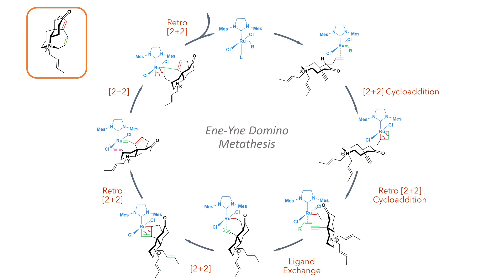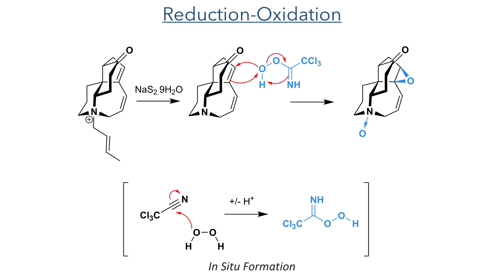Overall, this transformation has formed two new rings to complete the tetracyclic phosetamine framework. With the tetracyclic framework complete, the synthesis now entered the oxidation and reduction phase.